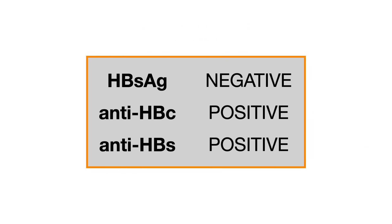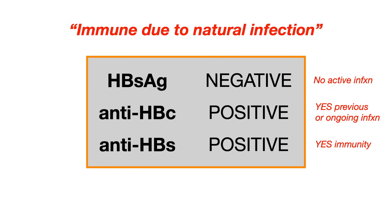What about this example? The person has a negative surface antigen, a positive core antibody, and a positive surface antibody. This person is immune, and they're immune due to natural hep B infection. Because their surface antigen is negative, they have no active infection. But their core antibody is positive, which means there's either a previous or ongoing infection. And because their surface antibody is also positive, that tells you there's immunity. The combination of those two antibodies being positive tells you they're immune due to a natural infection.